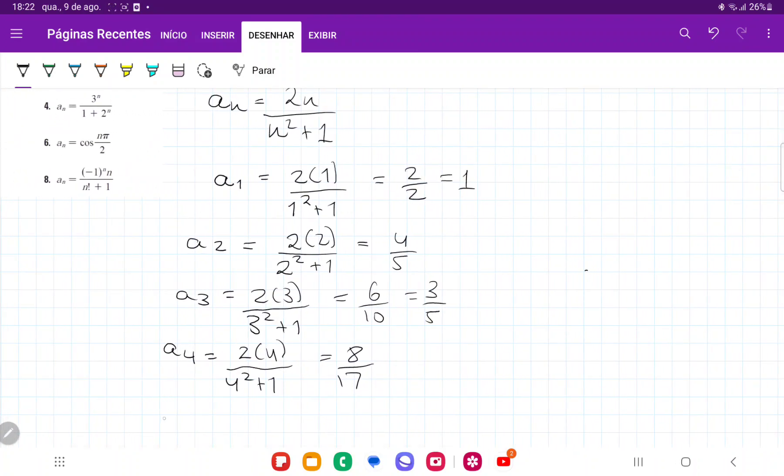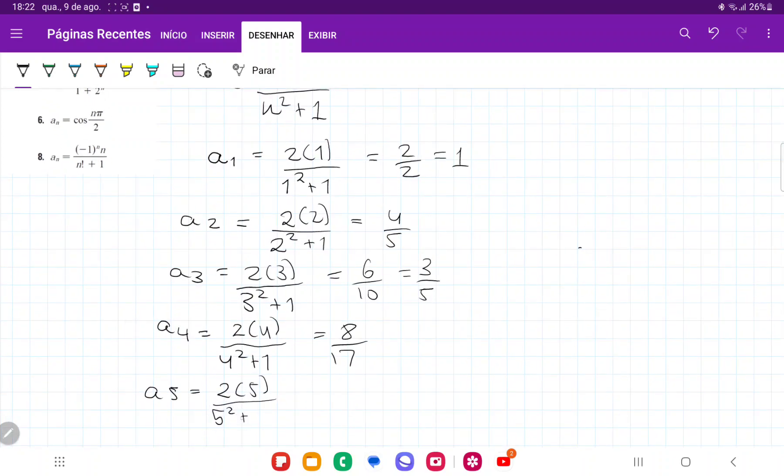And lastly, for a5, we're going to have 2 times 5 over 5 squared plus 1, so that is going to be 10 over 26, which gives us 5 over 13.